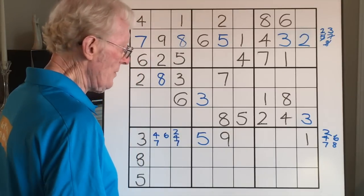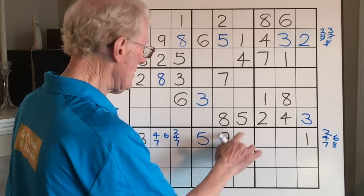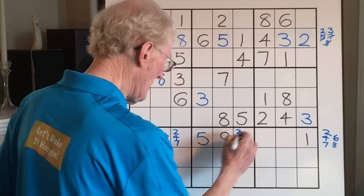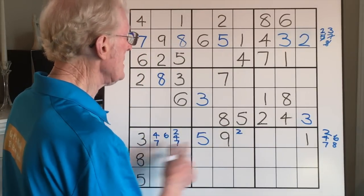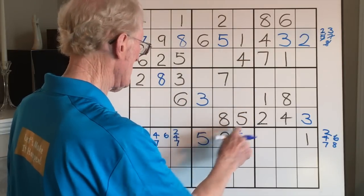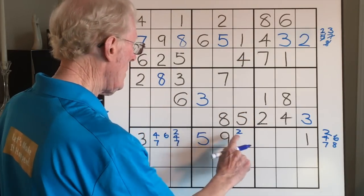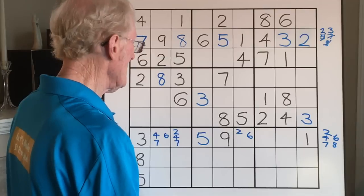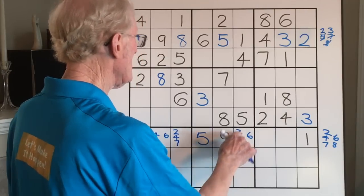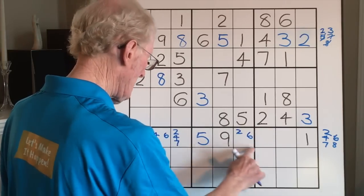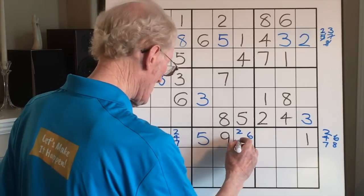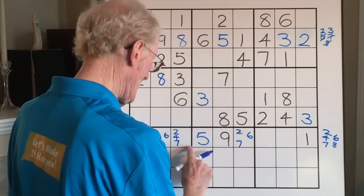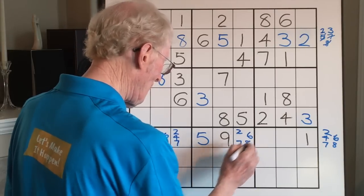Now let's go to the third cell. We know we can't have a 1. A 2 — is there a 2 up in the column? No. Is there a 2 in this block? No. So a 2 could go there. 3 is spoken for. Is there a 4 up in here? Yes. Is there a 5? Yes. Is there a 6? No 6 in that column, so we can put a 6 in. A 7 — no 7 in this column, no 7 in here, so 7 can go there. An 8 — no 8 up in this column, no 8 in here, so an 8 could go there. We have four possible numbers for this cell.